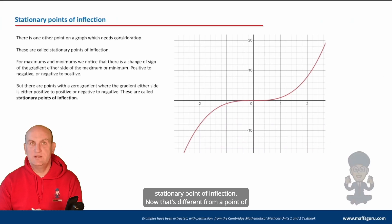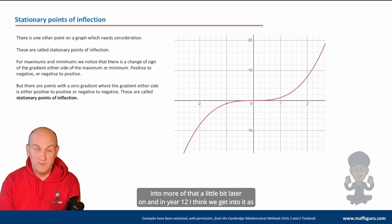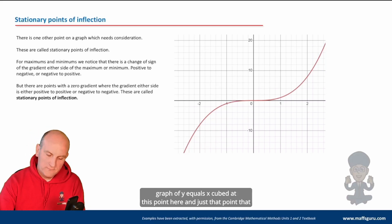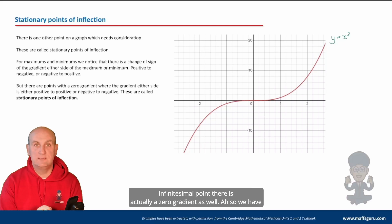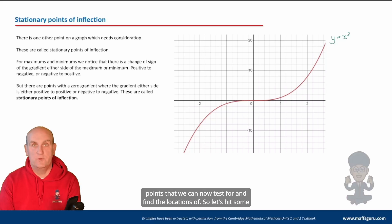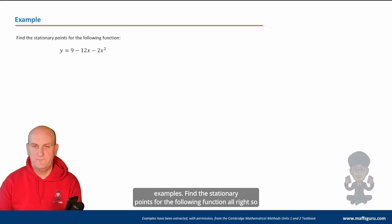Then we get to this thing called a stationary point of inflection — that's different from a point of inflection. For those doing specialist maths you'll get into more of that later. A stationary point of inflection: if I look at the graph of y equals x cubed, at that one infinitesimal point there is actually a zero gradient as well. So we have maximums, minimums, and stationary points of inflection — all points we can now test for and find the locations of. Let's hit some examples.